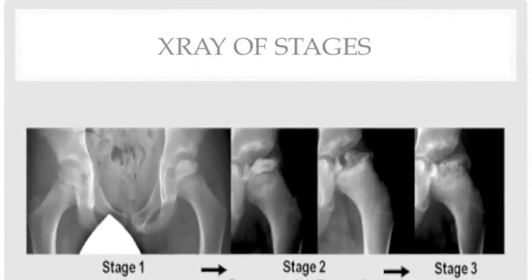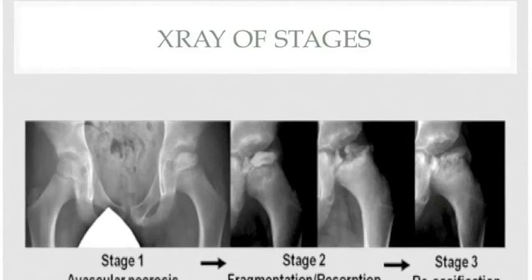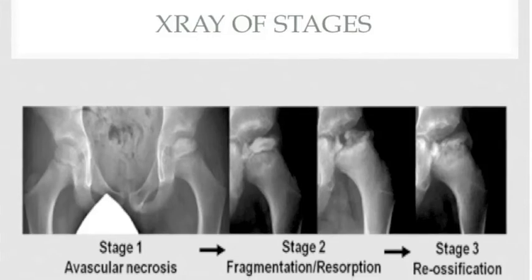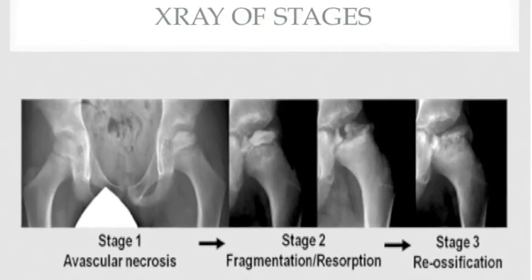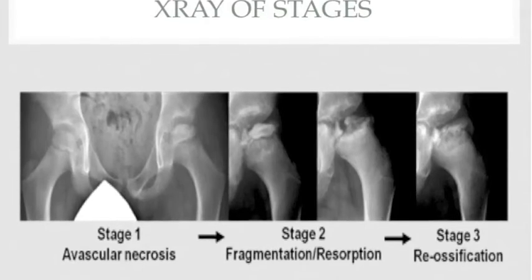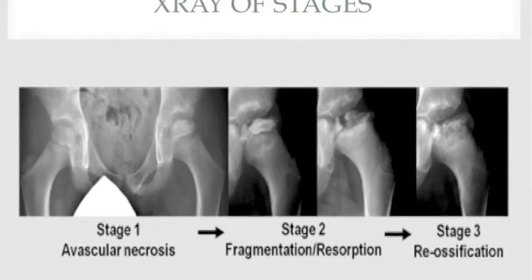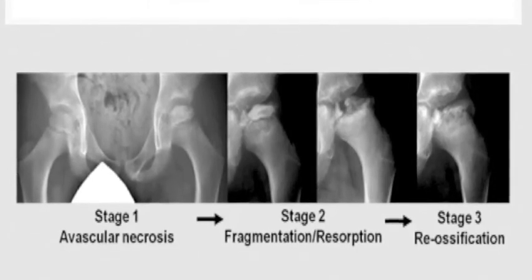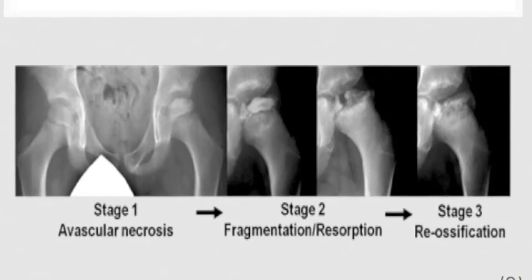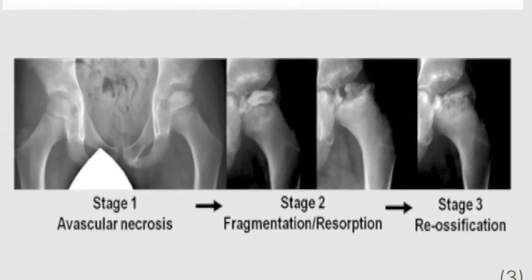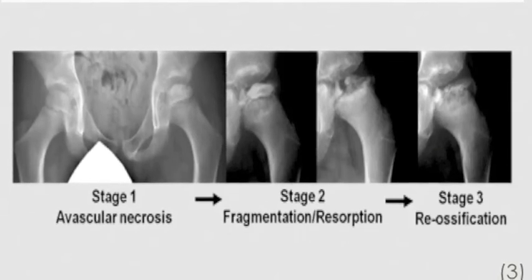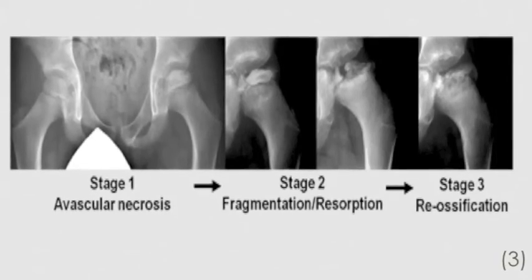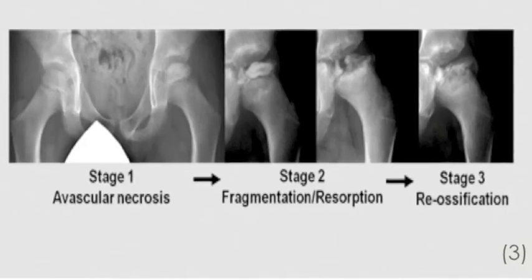This x-ray shows the first three stages of LCP. In the first stage, the affected femoral head appears wider and slightly smaller than the unaffected side, with increased distance between the femoral head and the socket, and the femoral head becomes more dense with a possible fracture. In the second stage, the femoral head starts to fragment, with darker spots indicating bone resorption, and may appear slightly out of the socket. In the third, healing stage, white areas of newly formed bone appear on the femoral head, gradually filling toward the center.